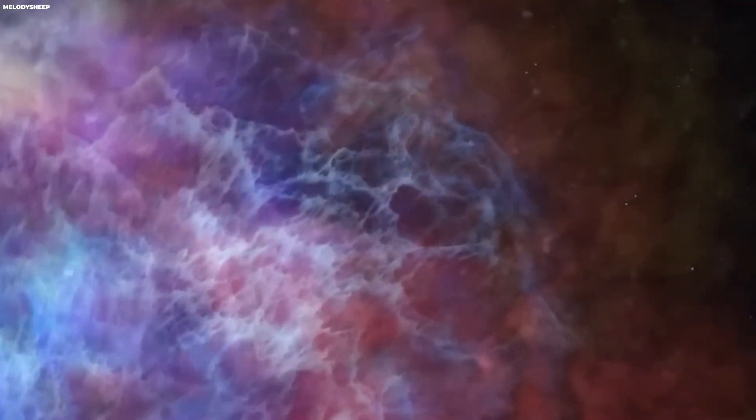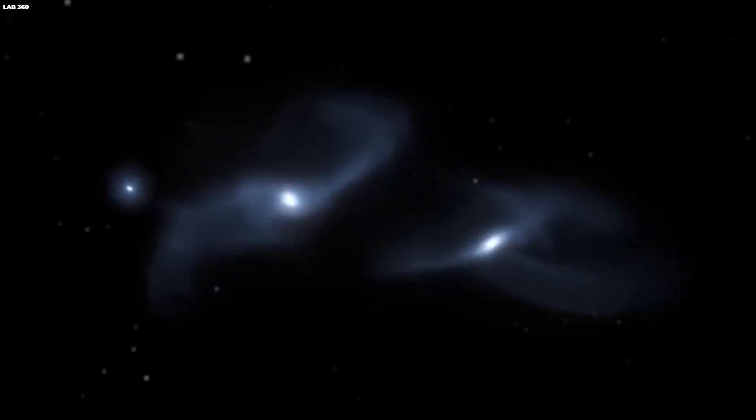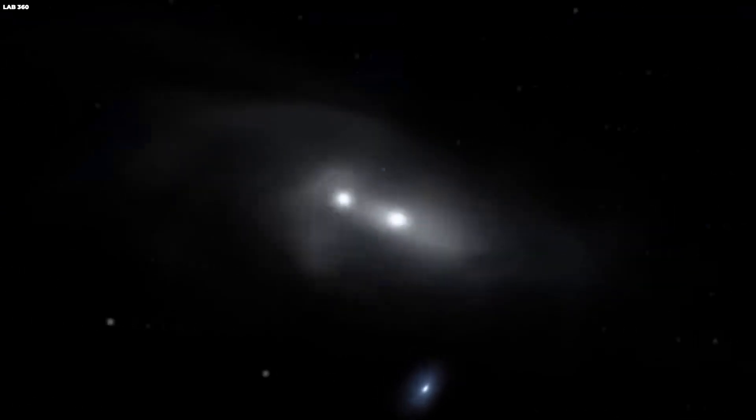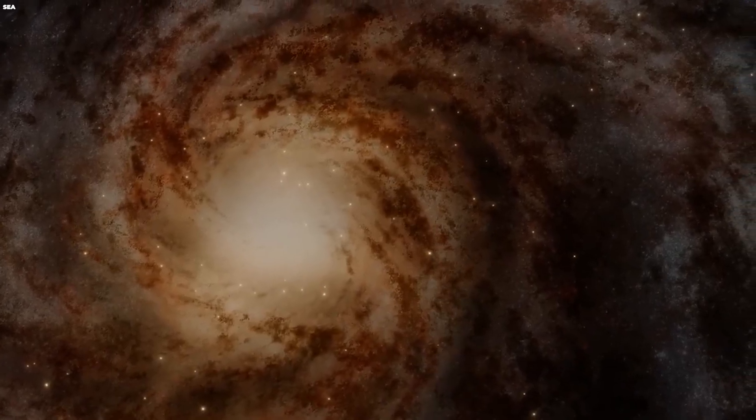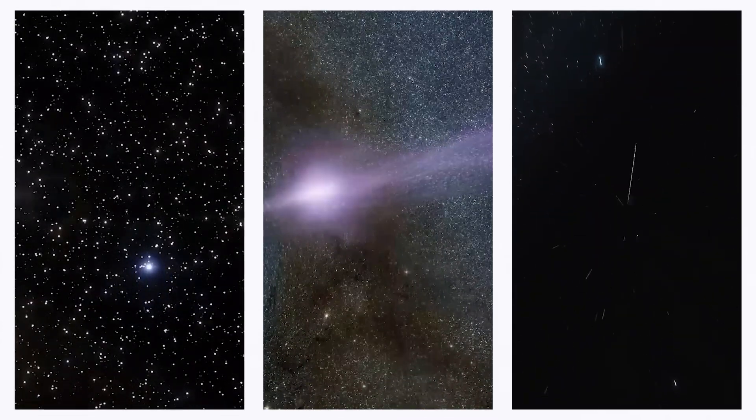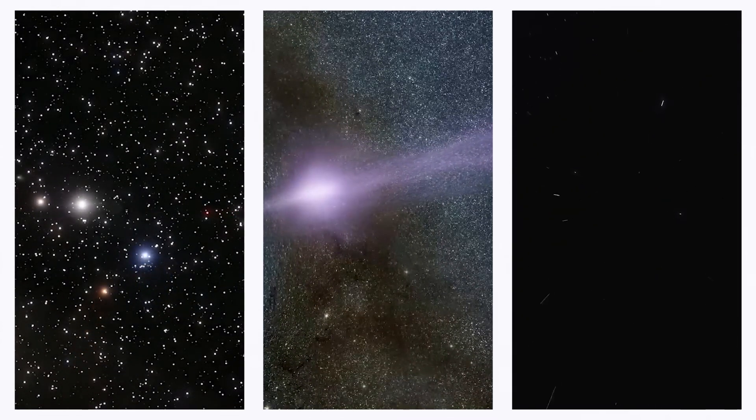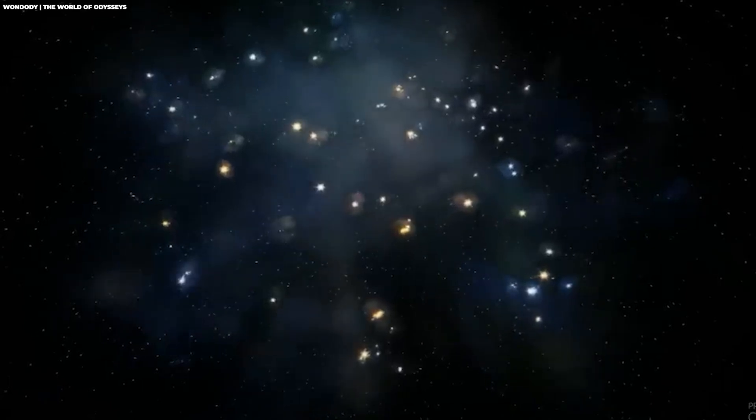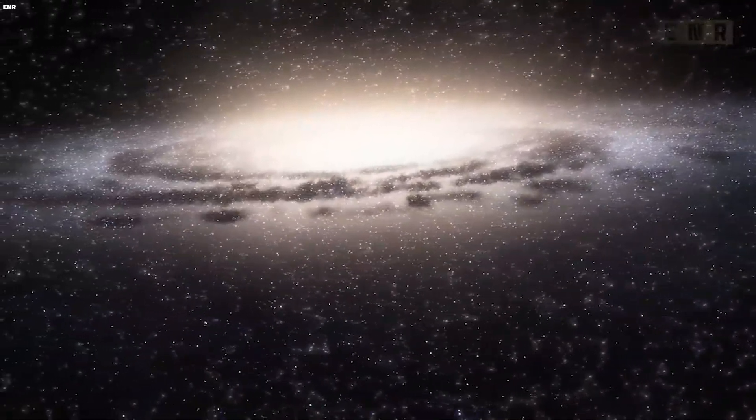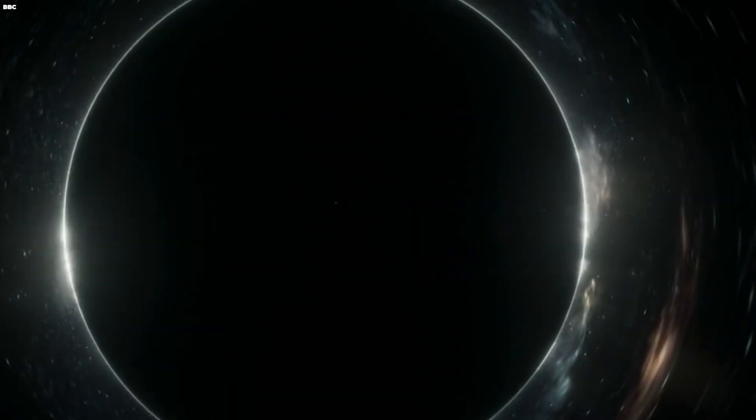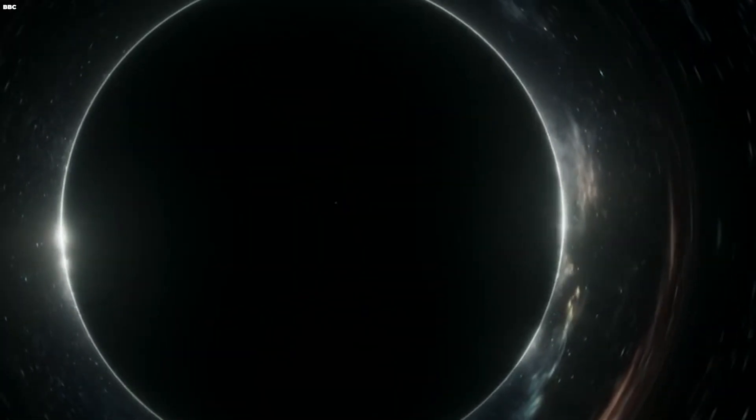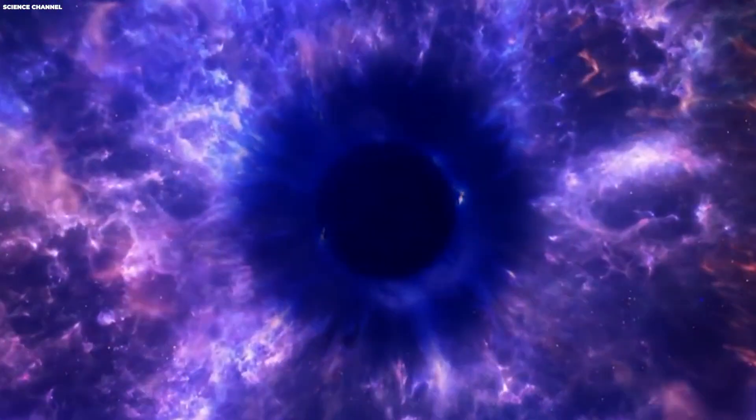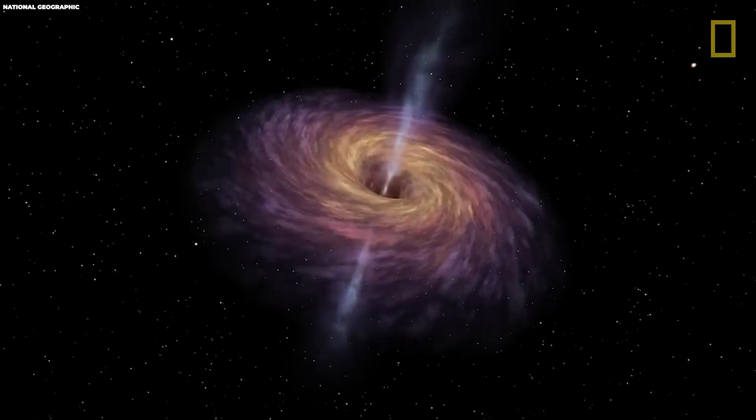Gravitational lensing is another valuable tool in understanding dark matter. In simple terms, it occurs when the gravitational field of a massive object, like a galaxy or cluster of galaxies, bends the path of light from more distant objects. This bending acts as a natural lens, magnifying and distorting the appearance of the distant object. In studying dark matter, gravitational lensing gives astronomers a unique way to detect and measure its presence indirectly. As light from distant galaxies travels through regions with dark matter, the gravitational field of the dark matter bends and distorts the light. By observing these distortions, scientists can map the distribution of dark matter in the universe.